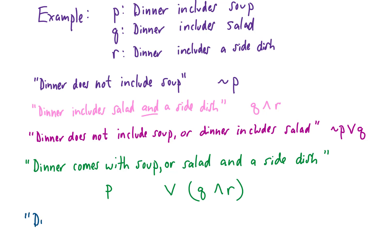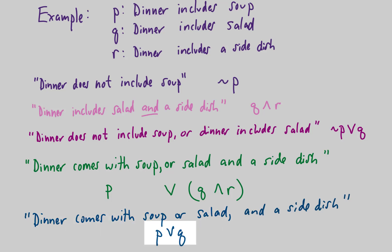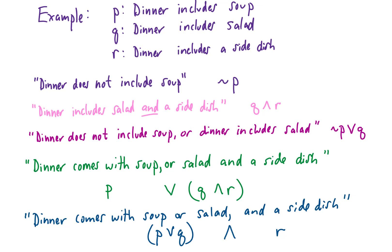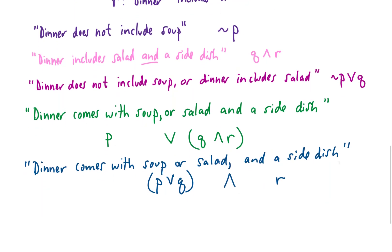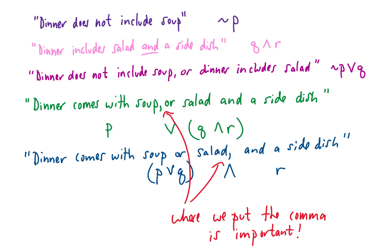But if we put the comma after 'salad', the first piece says dinner comes with soup or salad, written as p ∨ q, and the other statement says dinner comes with a side dish (r), connected with 'and': (p ∨ q) ∧ r. So now the statement says dinner comes with soup or salad — you choose — and it also comes with a side dish. The placement of the comma is very important.